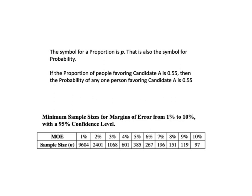The symbol for a proportion is P, which is also the symbol for probability. The two concepts are related: if the proportion of people favoring candidate A is 0.55, then the probability of any one person favoring candidate A is also 0.55. If you want a quick number for a sample size, this table shows minimum sample sizes for a 95% confidence level — the most common — and for several values of the margin of error, symbol MOE or E. Lowercase n is the sample size and uppercase N is the size of the population or process.